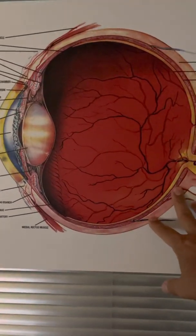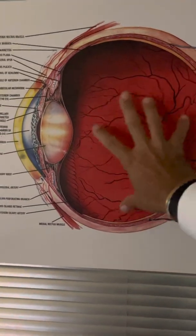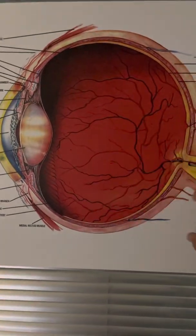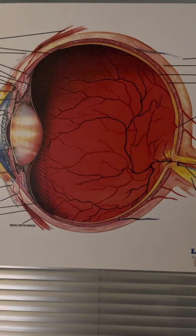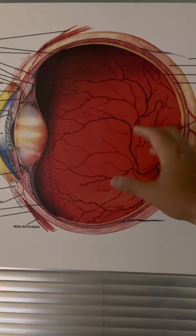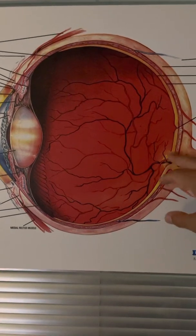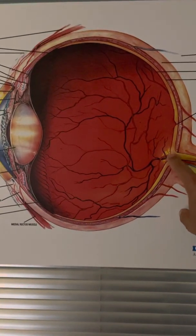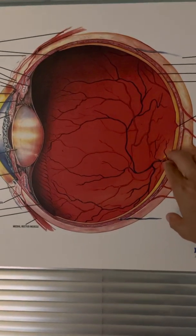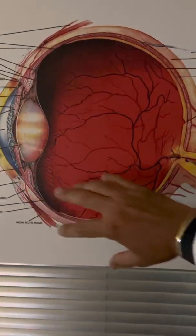Floaters usually are created when the vitreous body, which is the gel that's within the eye dome, so to speak, detaches from the retina and some fibrotic material, usually between the vitreous body and the optic nerve, starts to float within the vitreous cavity.